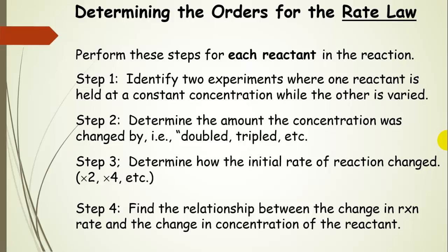We're going to go through a series of four steps for each reactant. Step one: find two experiments where one reactant concentration is held constant — for instance, hold B constant and vary the other. Step two: determine how much the concentration was changed — was it doubled, tripled, etc. Step three: determine how the initial rate of reaction changed — did it go up by twice, four times? Step four: look for the relationship between the change in reaction rate and the change in concentration of the reactant.